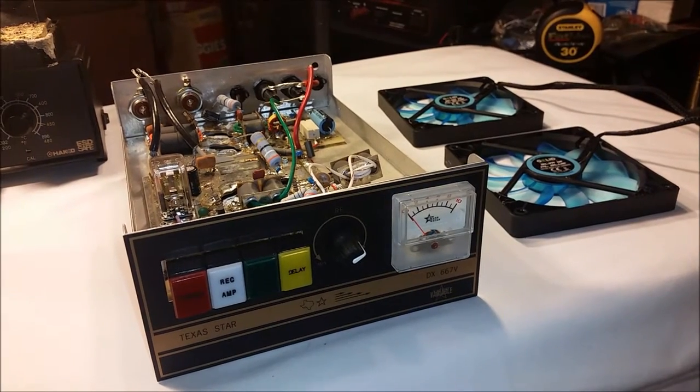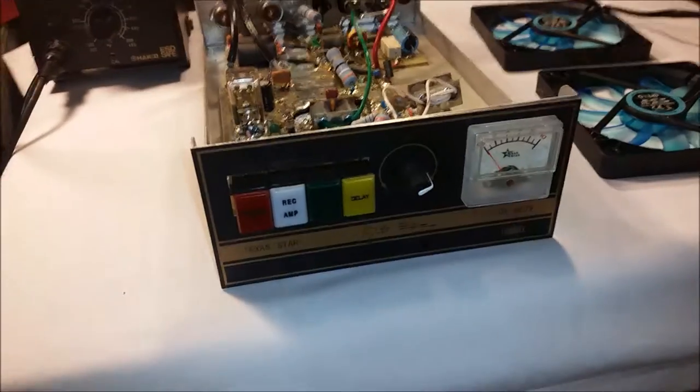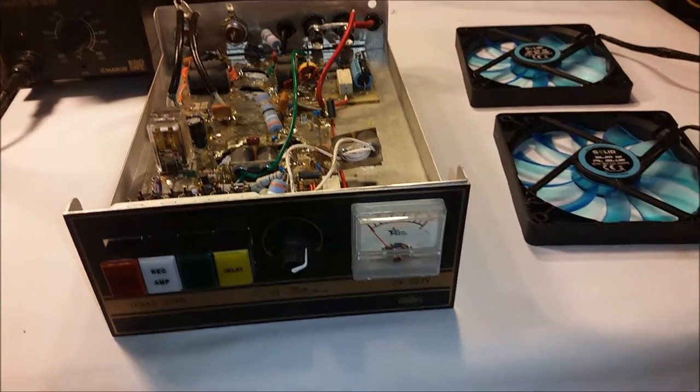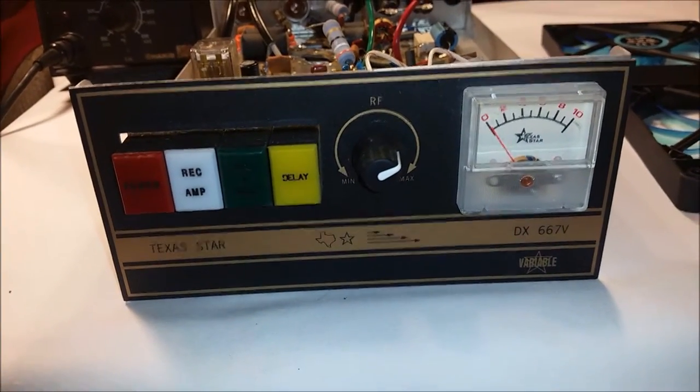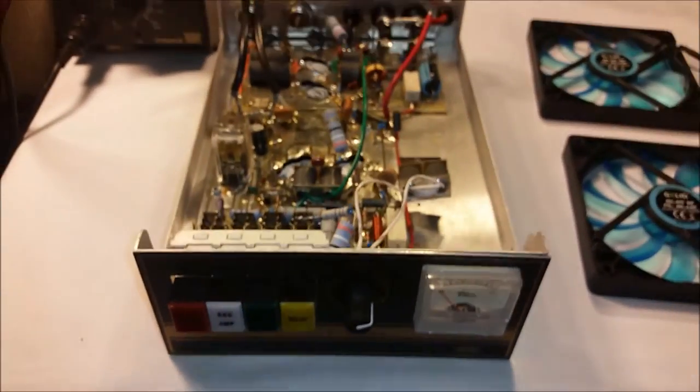Alright, old Gatekeeper here. I'm going to do something I haven't done before specifically. We're going to turn this Texas Star 667 into a sleeper, a Gatekeeper-built sleeper.